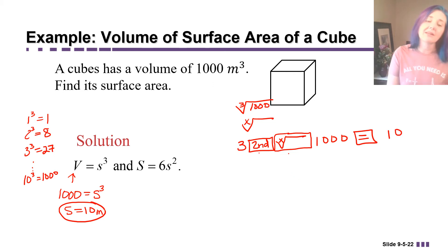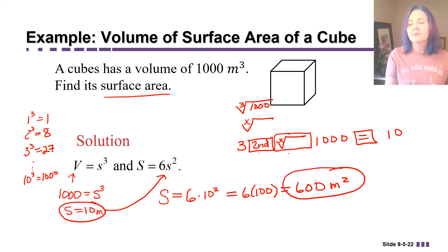Okay, so now that we found that S is 10, we're not quite done yet, because we need to find the surface area. So we're going to plug into the surface area formula. So we have capital S, the surface area, is equal to six times little s squared, or 10 squared. So that's going to be six times 100, which is 600, and the units are going to be square meters this time, because area is always in square units.